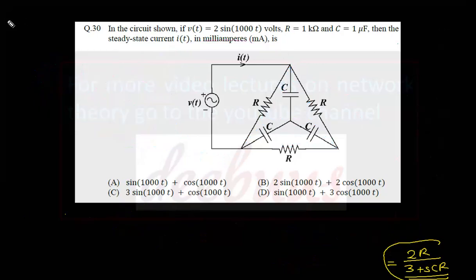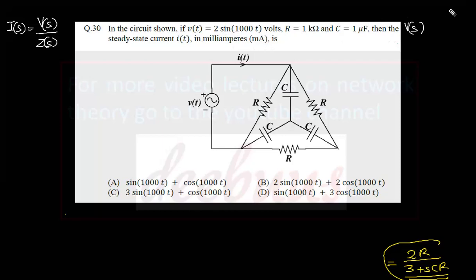We have to calculate the current in terms of frequency domain. That is I(S) equal to V(S) by Z(S). Z(S) we have already calculated. Now we have to check what is V(S). V(T) is given as 2 sin(1000T). Converting to frequency domain: Laplace transform of sin(ωT) is ω/(S²+ω²). So V(S) = 2 × 1000 divided by S² plus 1000 squared.